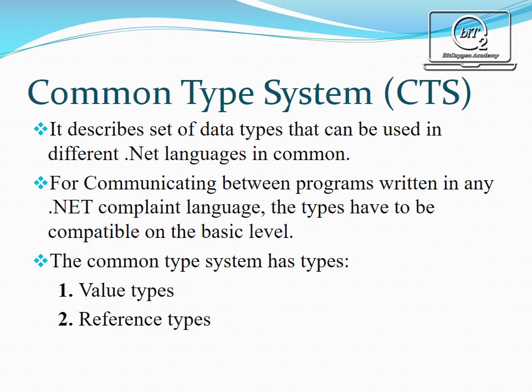For communicating between programs written in any .NET languages, types have to be compatible on a basic level. For example, in .NET Framework there is a single class called System.Int32 to interpret an integer variable. Similarly, for the ArrayList data type, .NET Framework has a common type called System.Collections.ArrayList. The .NET Framework System.Object is the common base type from which all other types are derived.